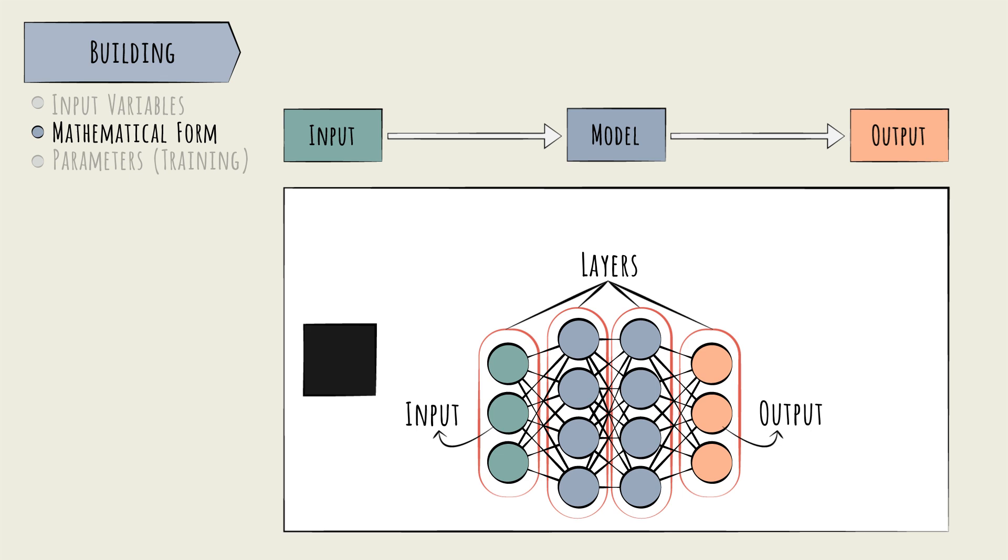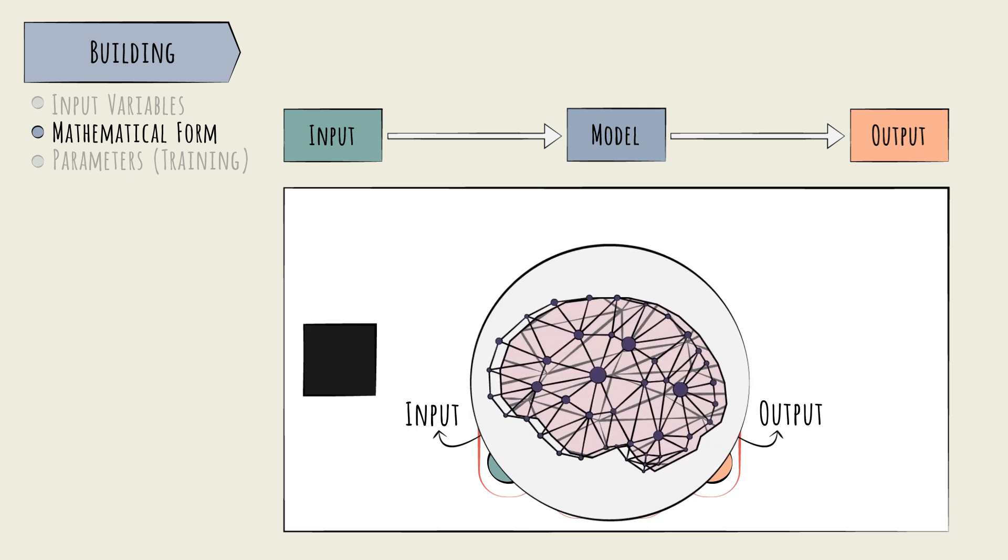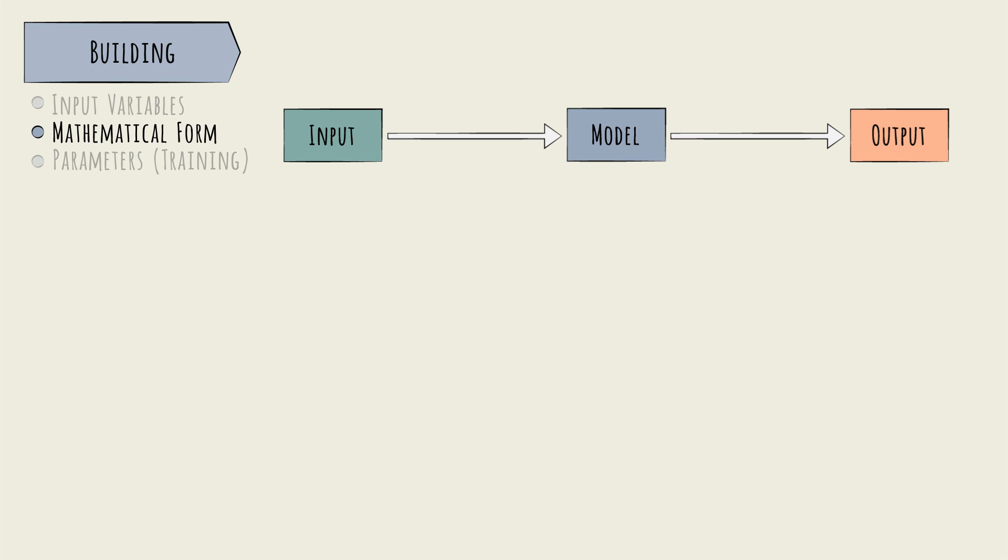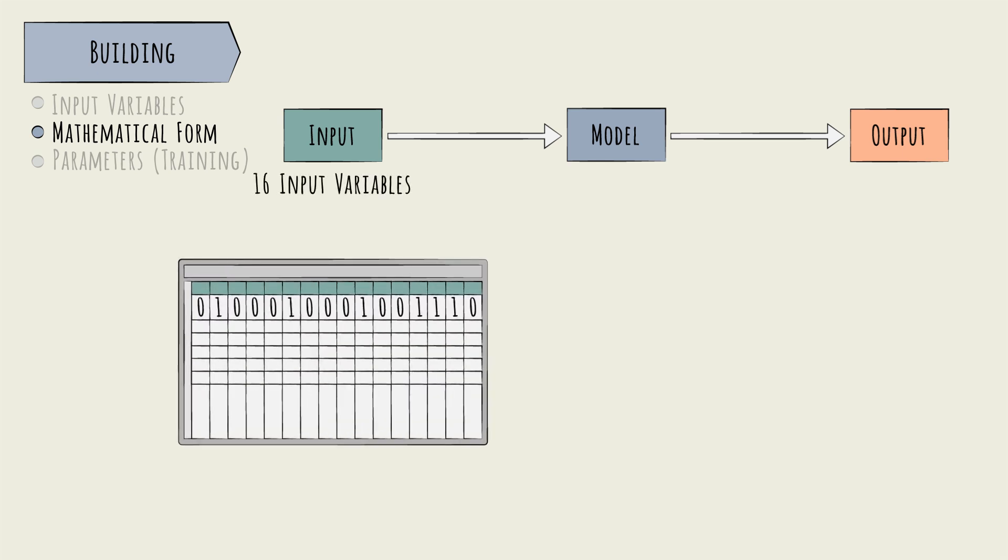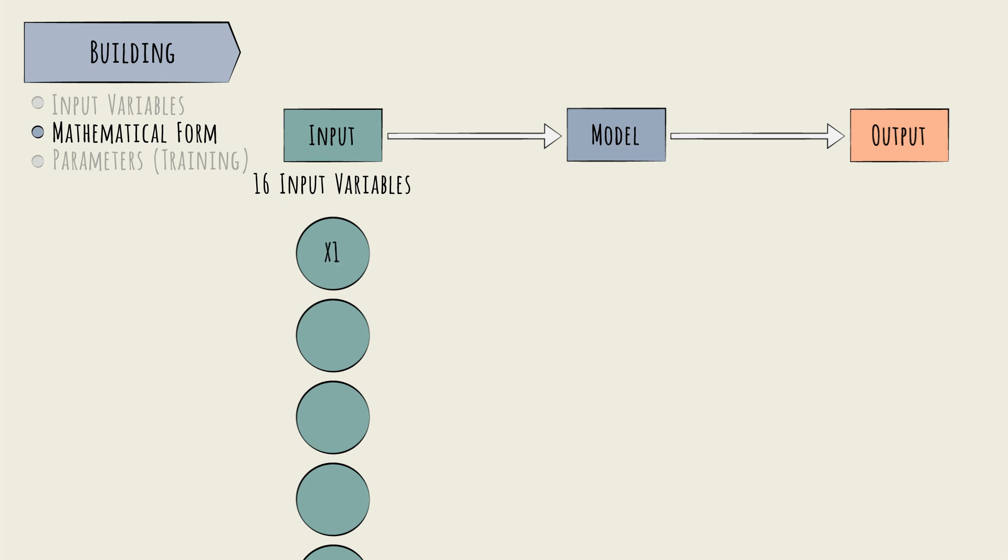This is loosely inspired by how the biological neurons in the human brain work. Since we have 16 input variables, our input layer will have 16 neurons. We can label them x1 to x16. Our output layer in this case can be a single variable designed to reveal the model's answer. Is the input image a t or not? We can call this neuron y1.